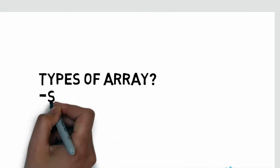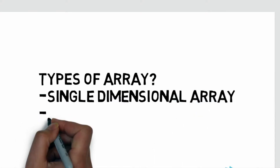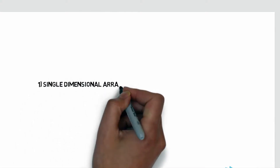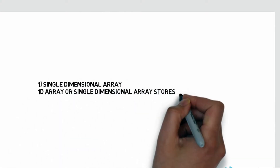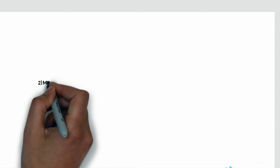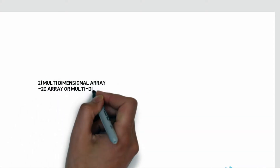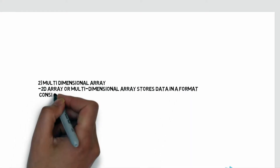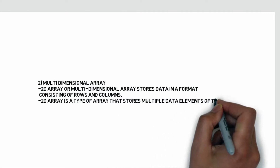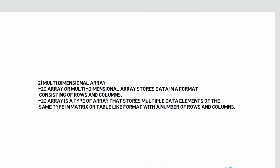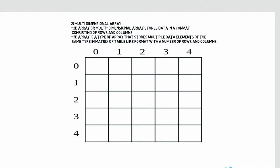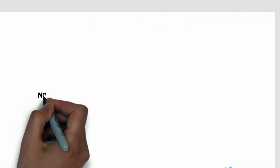To solve the size limitation problem, we use the collection framework. There are two types of arrays: single-dimensional array and multi-dimensional array. A single-dimensional array shows a list of variables of the same data type accessed using the index value. A multi-dimensional or 2D array shows data in rows and columns format, with rows and columns each indexed from 0 to 4.